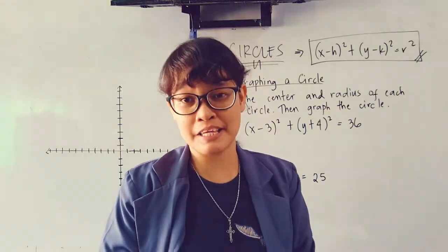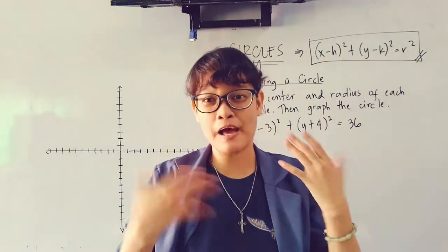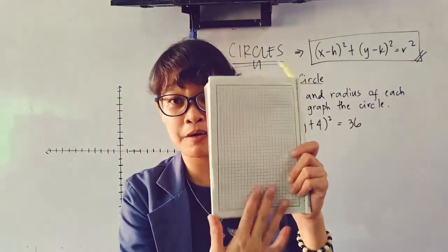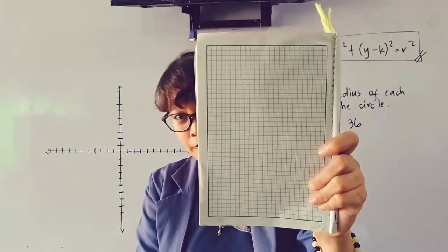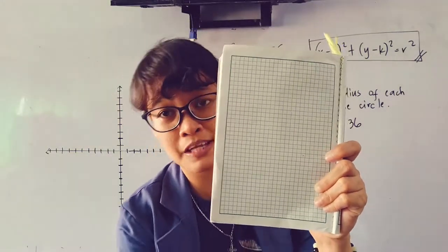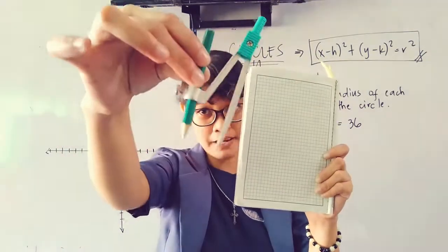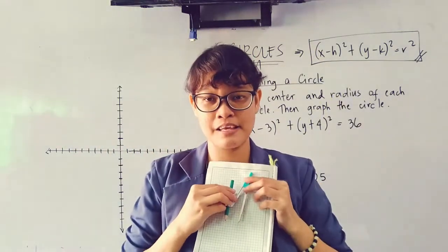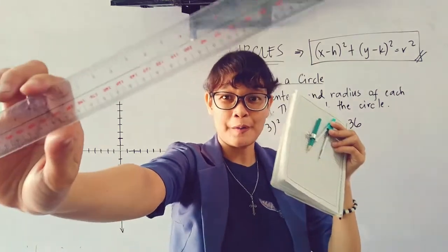To make it easier and faster to graph, I think you should have the following materials. One is a graphing notebook, because it has grid lines. And then of course, since we're dealing with circles, you should have a compass so you can draw a perfect circle according to the measure of the radius. And lastly, for more accuracy, you need a ruler.